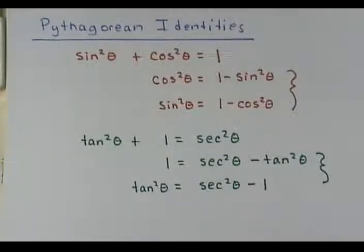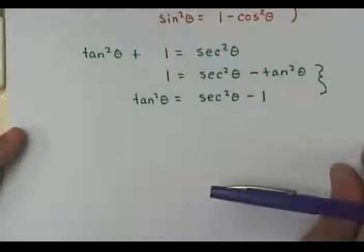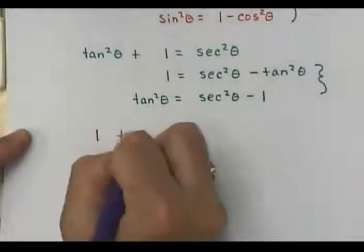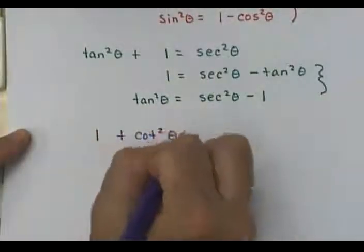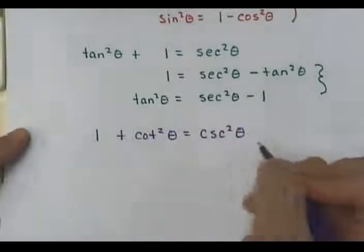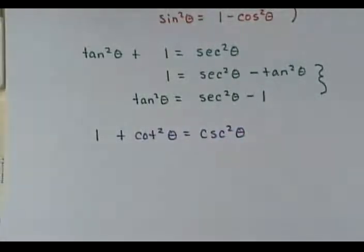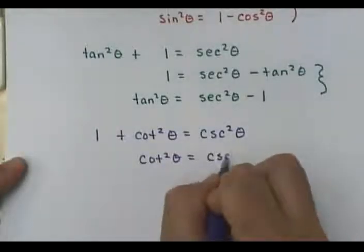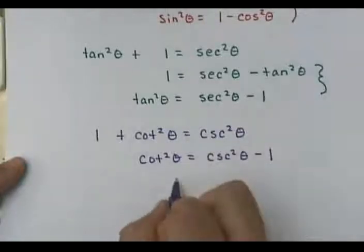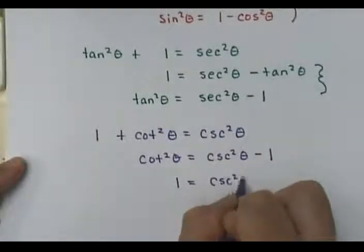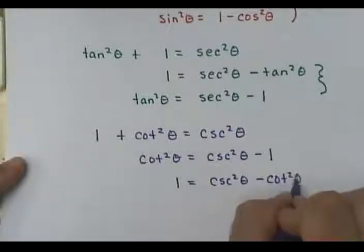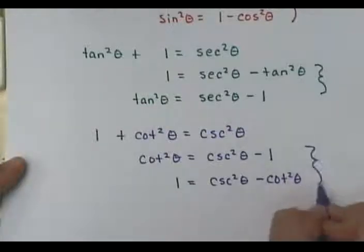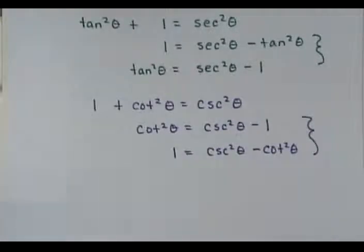The last Pythagorean identity, with its alternate forms, is 1 plus cotangent squared theta equals cosecant squared theta. One alternate is cotangent squared theta equals cosecant squared theta minus 1, and the other is cosecant squared theta minus cotangent squared theta equals 1. Take a minute and copy those, because the book doesn't give you the alternate forms.